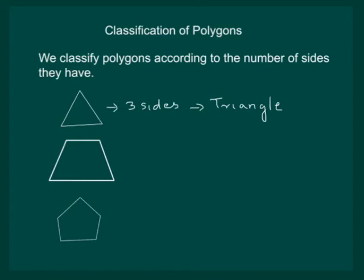Now look at the second figure. It has got four sides. So we name it as quadrilateral. Next figure has five sides and it is called a pentagon.